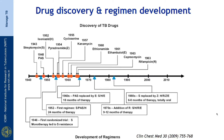There was a need to improve treatment regimens, and luckily we had rifampicin in the 1960s, which changed the picture totally. Currently the line of management is to use 4 drugs — rifampicin, INH, pyrazinamide, and ethambutol — and we are able to reduce the duration of treatment to 6 months, known as short course chemotherapy.